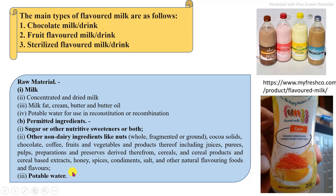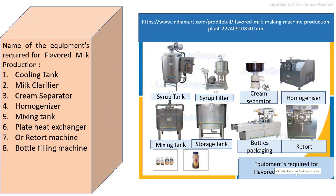The main equipment required for the production process of flavored milk includes: milk processing equipment such as milk cream separator, homogenizer, milk pasteurizers, or milk sterilization systems — either batch or continuous type. Also required are packaging equipment, syrup preparation tanks, storage tanks, and mixing tanks. These are the main equipment required for the production of flavored milk.